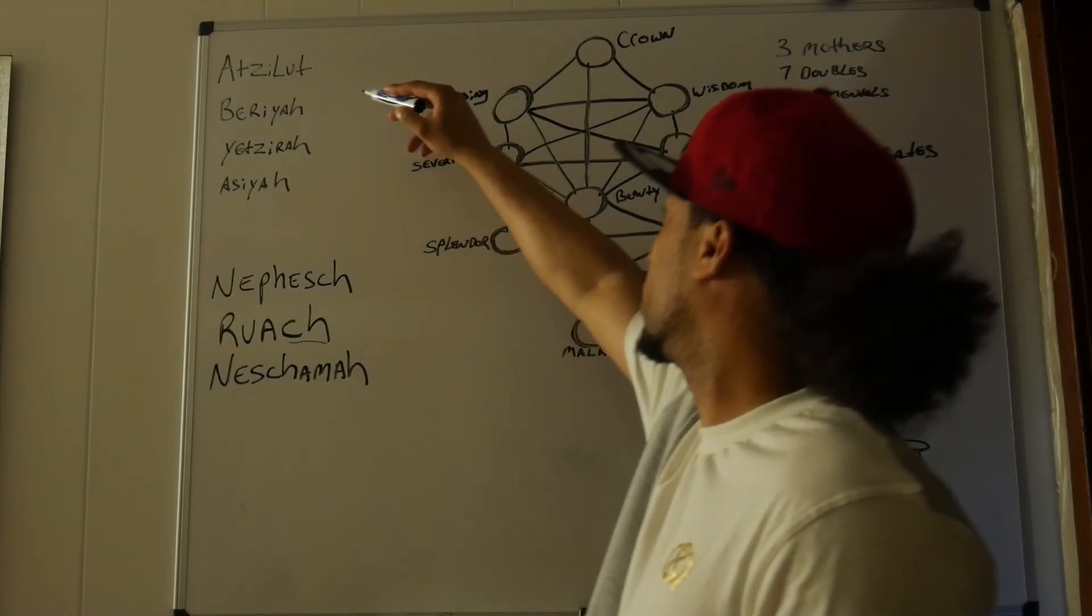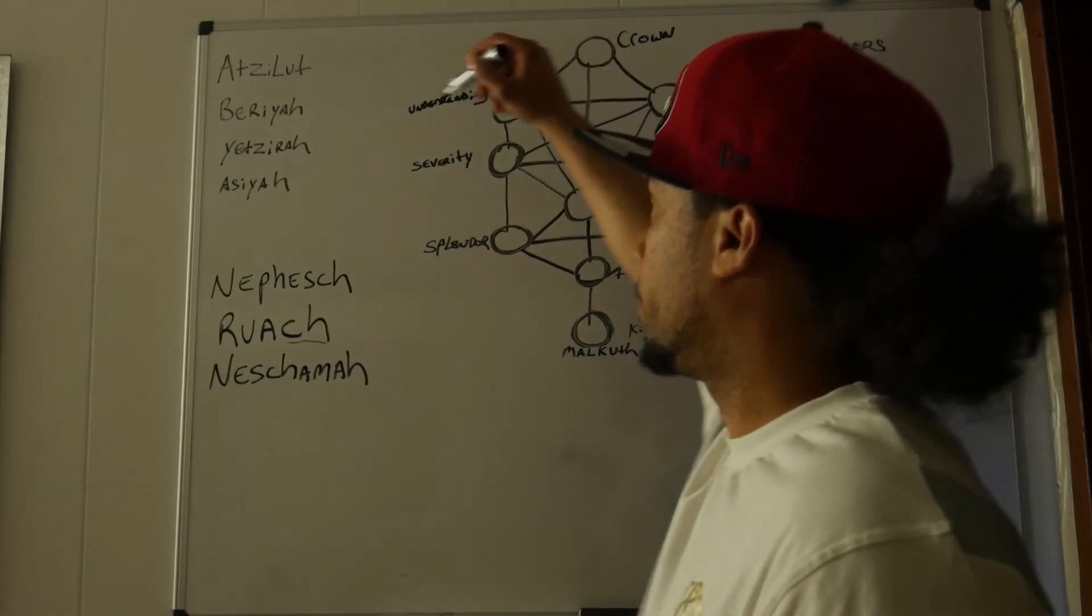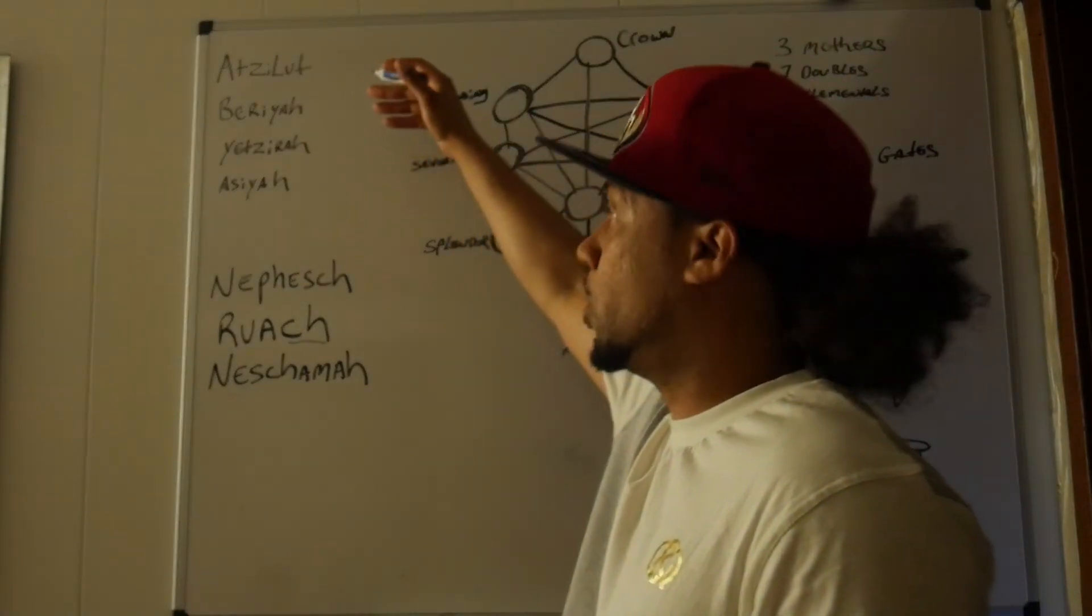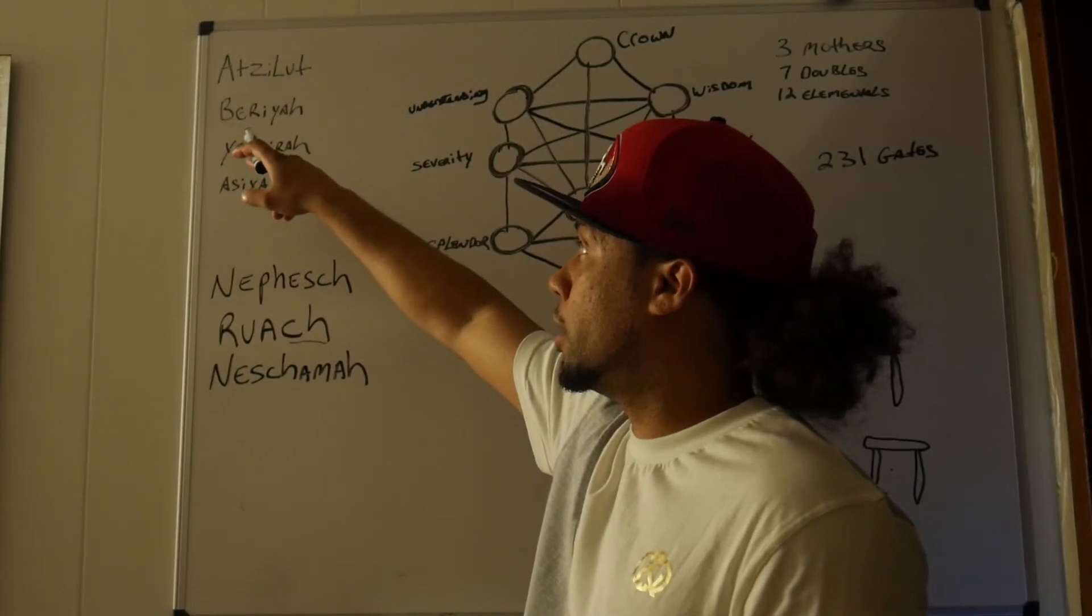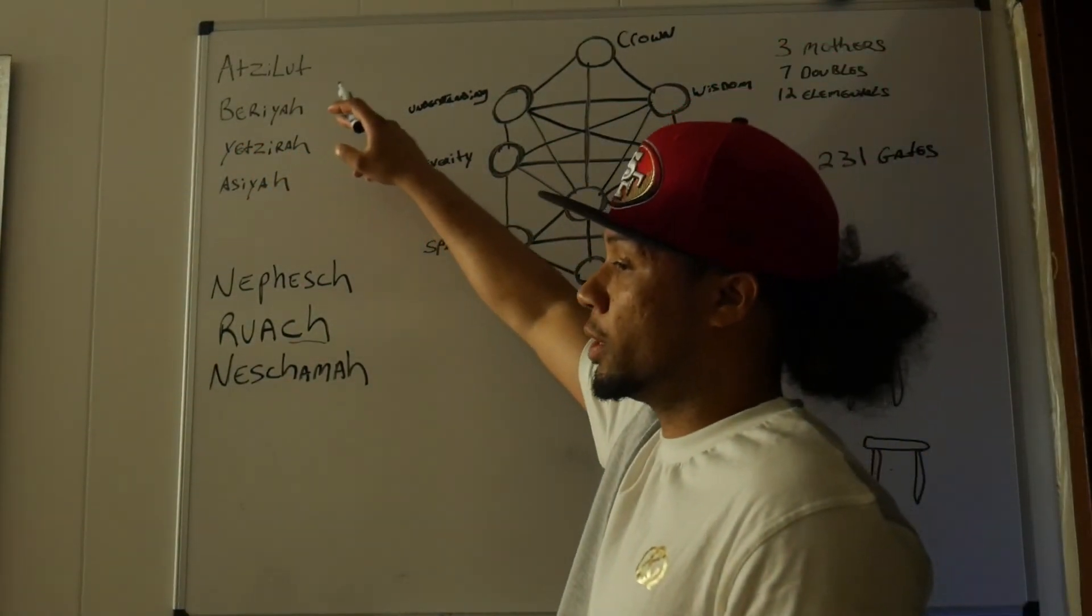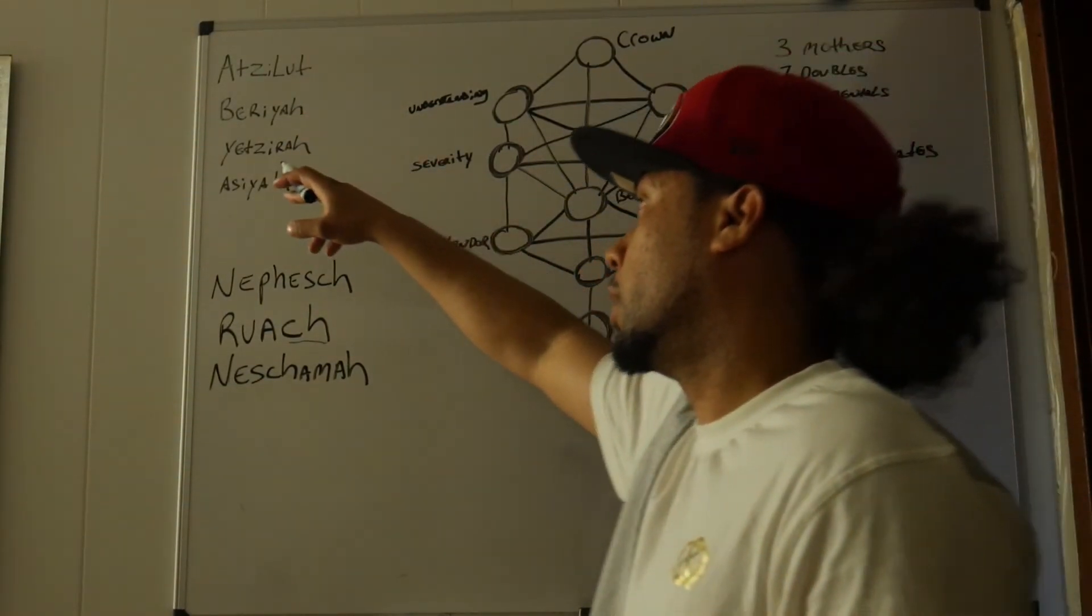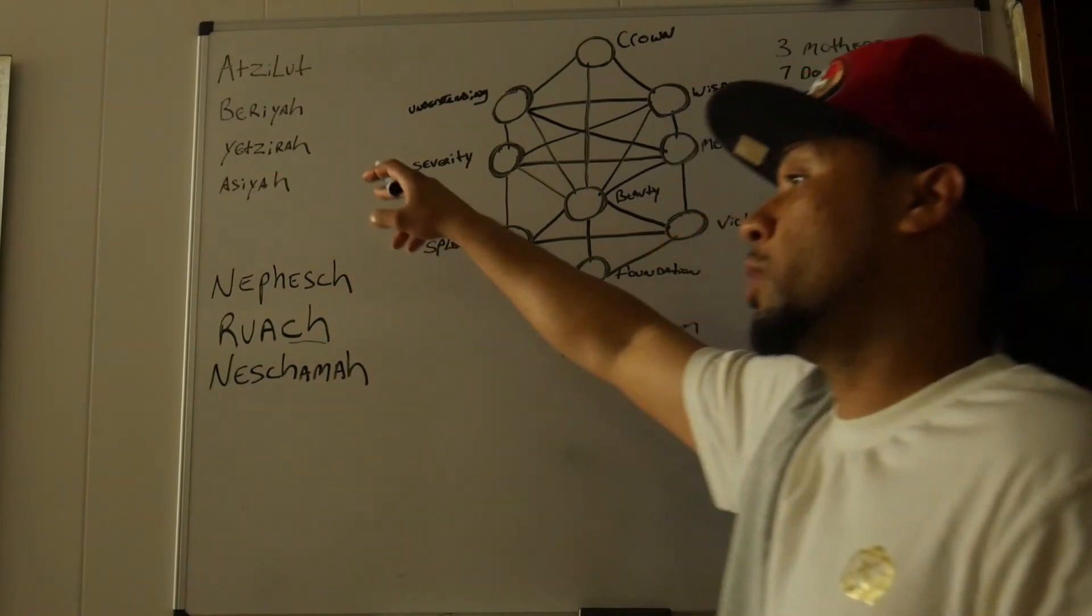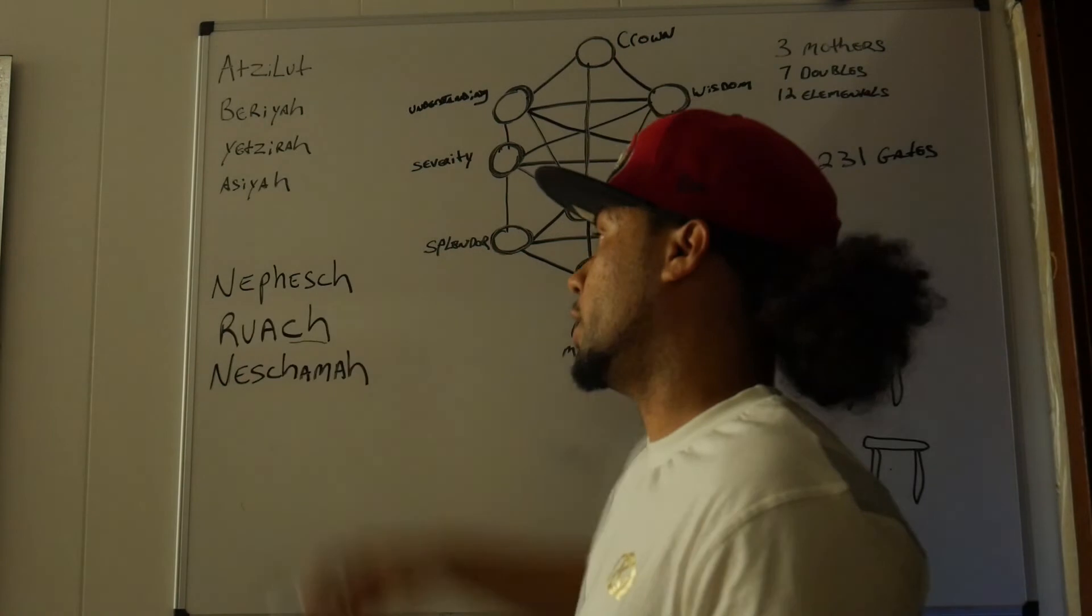So in the four worlds of creation, we have Absolute, which deals with the Ainsoph, the No Thing. Then we got Beriah, which deals with nothing to something. Then Yetzirah, which deals with something to something. Then we got Asiyah, with form creation.